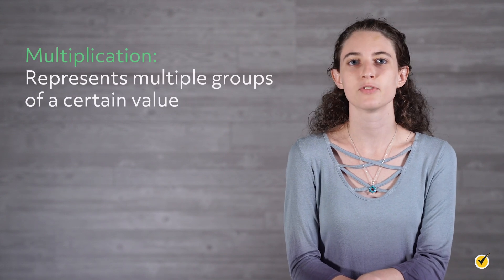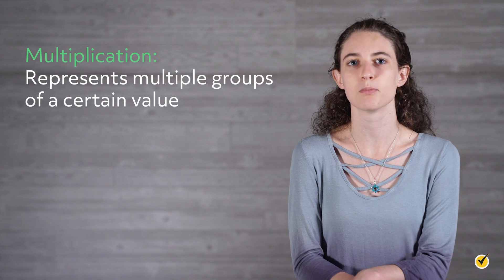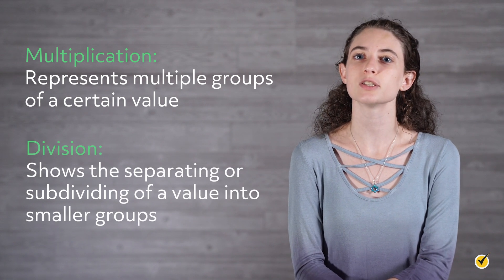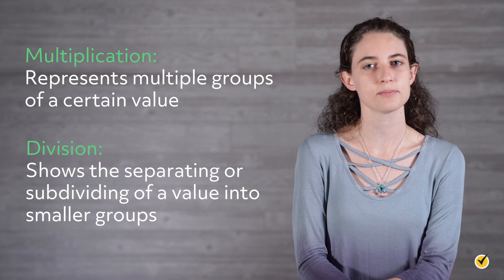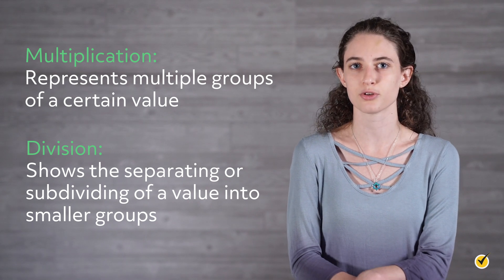Another operation that also shares the commutative property is multiplication. Let's discuss multiplication together with division, as we did for addition and subtraction. Multiplication and division are similar to addition and subtraction in that they perform opposite functions. The function of multiplication is to represent multiple groups of a certain value, whereas division is designed to show the separating or subdividing of a value into smaller groups.